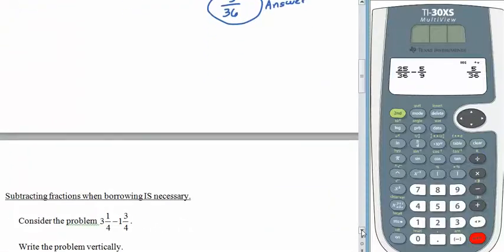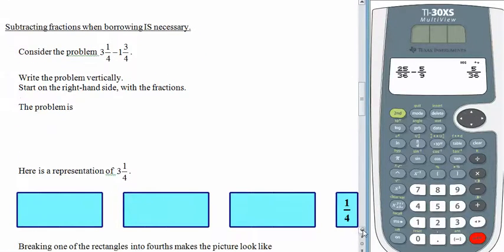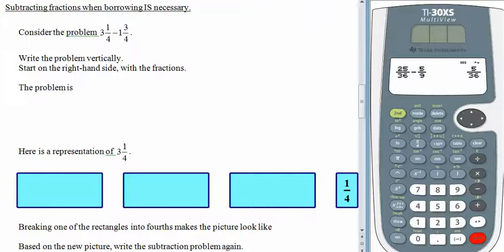We'll start with a nice easy one that we can put a picture to. Let's say we have the problem 3 and 1 4th minus 1 and 3 4ths. I like this problem because we can think about money and talk about fourths as quarters. Let's write this vertically. 3 and 1 4th, and we'd like to subtract 1 and 3 4ths. As always, we have to start on the right-hand side. I have 1 4th and I need to subtract 3 4ths. And that's a problem.